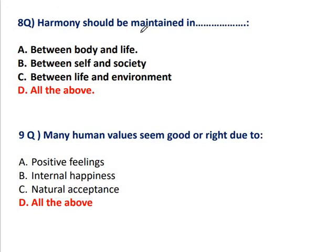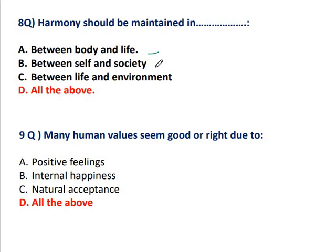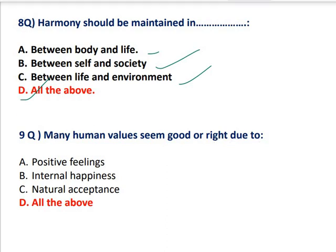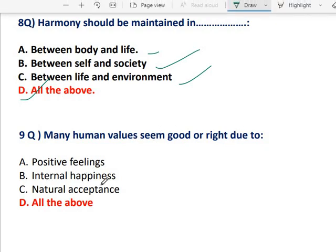Question 8: Harmony should be maintained in — between body and life within human being, between self and society and family, and between life and environment with nature. So all of the above is the correct answer. Question 9: Many human values seem good or right due to — because of positive feeling, internal happiness, and natural acceptance. These all three are the causes by which we say a value is right or wrong. So the correct answer is all of the above.